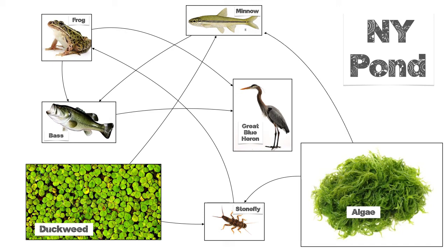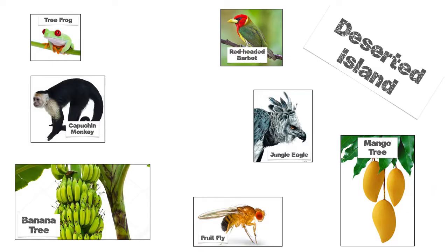Some algae might also be eaten by the minnow. So again, it's looking more like a web — it's a collection of chains stuck together. The minnow in the middle can also be eaten by the heron. What I'm going to want you to do is figure out some of the food chains and food web connections in this scenario of the deserted island.